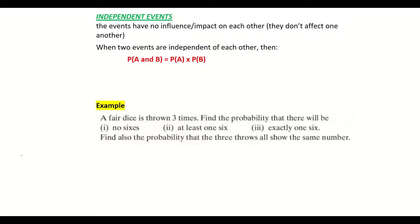Looking at this question here below: a fair dice is thrown three times. Find the probability that there will be — part one: no six; part two: at least one six; part three: exactly one six; and finally, find the probability that the three throws all show the same number. So there are four parts to this question.